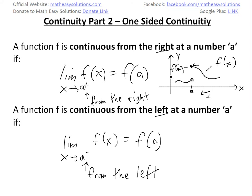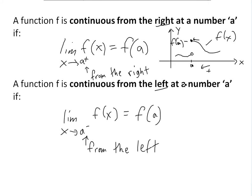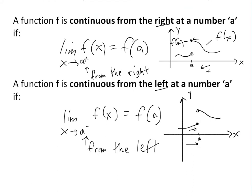It's not continuous from the left side because it is not defined there. As covered in part one of continuity, the function needs to be defined. Similarly, this second graph is exactly the same except now the defined point is switched to the left side, so it's continuous from the left and not continuous from the right. This is the new f(a).